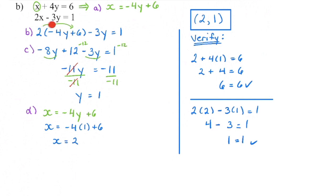Begin by distributing in the 2 to get rid of those brackets, combine your like terms and isolate Y. When we do that, Y has a value of 1. A solution to a system is an ordered pair. To get the value of X, we can see that we've already isolated X up here, so I'm going to take this equation to find out what X is equal to. Knowing that Y has a value of 1, we're going to put a 1 in here: negative 4 times 1 is negative 4, plus 6 gives me an X coordinate of 2. We're then going to verify it by taking each equation, substituting in the value for X and Y, and checking does the left side equal the right side.